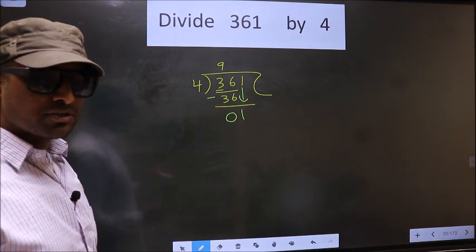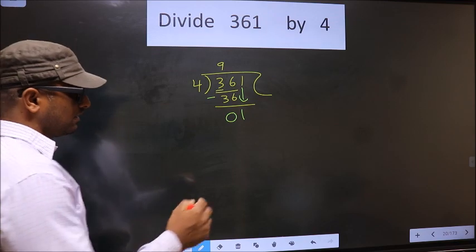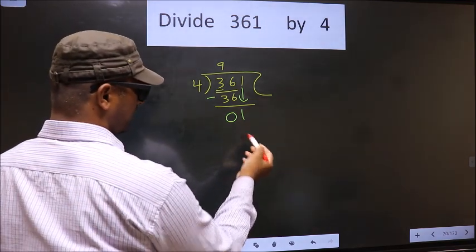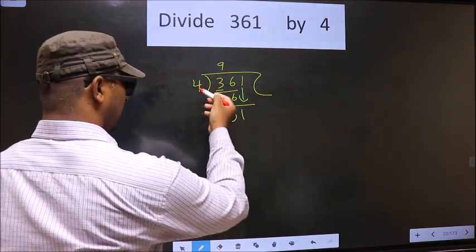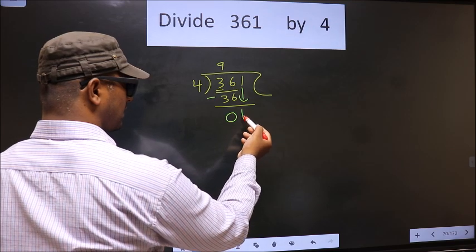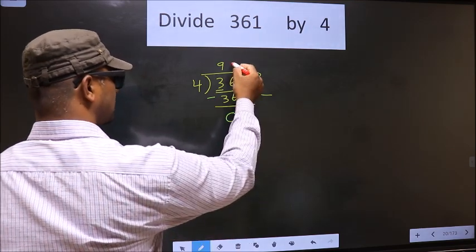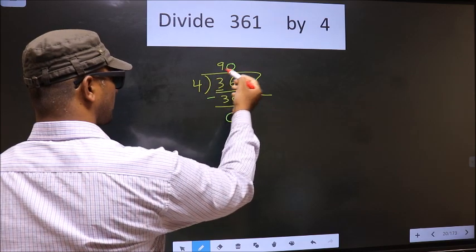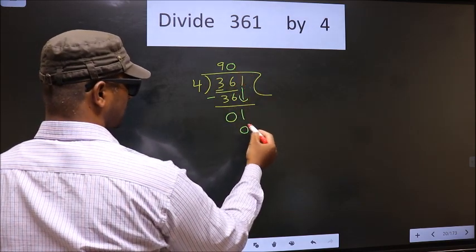Instead, what you should think of is, what number should we write here? If we write 4, that is larger than 1. So, what we do is, we take 0 here. So, 4 into 0, 0.